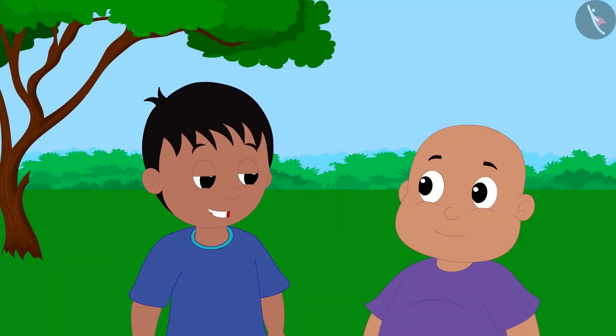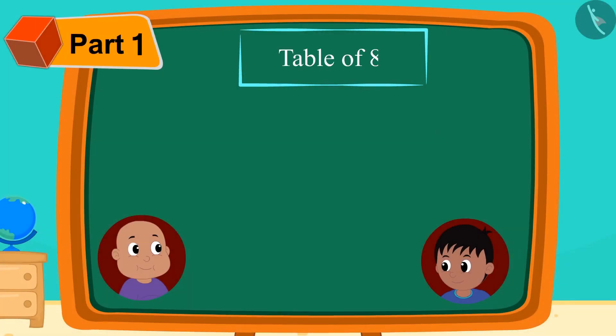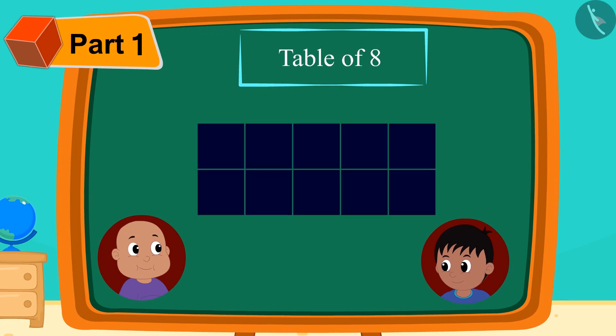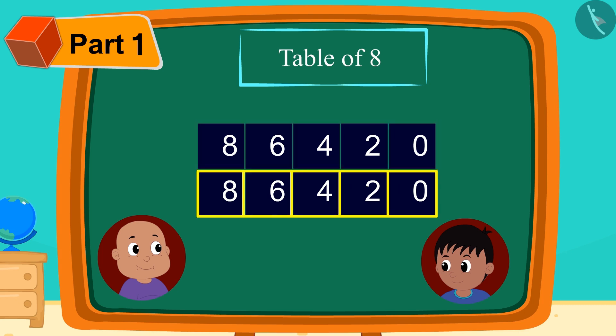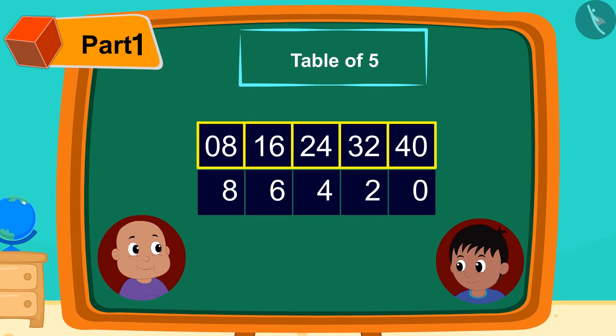Now, Raju is telling Bablu that he can easily make a table of 8 using a similar pattern. Raju once again made such a table. Now, in front of the digits written in the first line, Raju wrote 0, 1, 2, 3, 4.